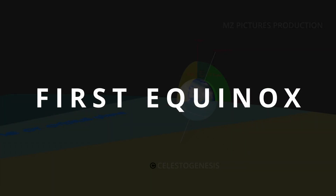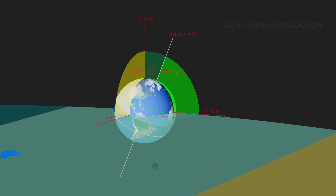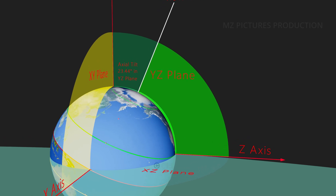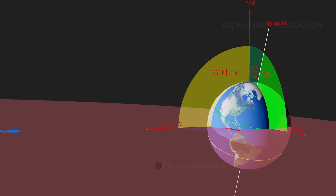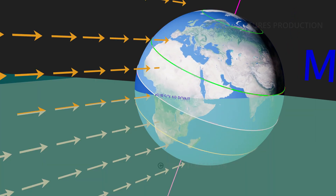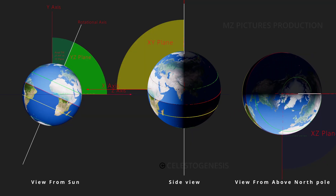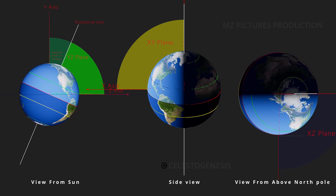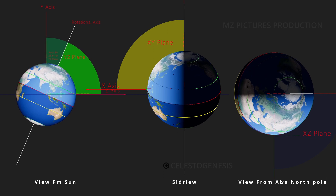For the March equinox, consider three axes for Earth — x-axis, y-axis, and z-axis. Earth's axial tilt is in the y-axis at 23.44 degrees in the y-z plane. On this particular day, the y-z plane becomes perpendicular to the sun rays, making the subsolar point pass through the equator. This results in equal amounts of sunlight in both hemispheres and equal amounts of day and night throughout Earth, as shown by red dots placed at different points on Earth's surface taking equal time for day and night.